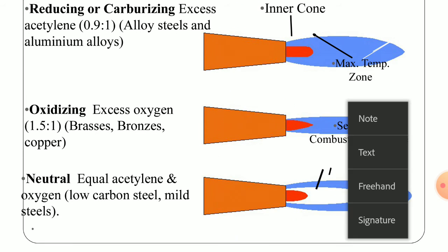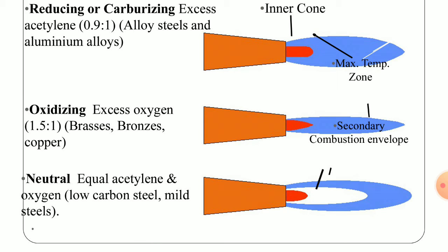The neutral flame has acetylene and oxygen supplied in equal proportion. The color combination and type of flame can be clearly seen. These pictures in the presentation will help enhance your understanding about the type of flame generated, and are very useful for beginners who are welding for the first or second time.